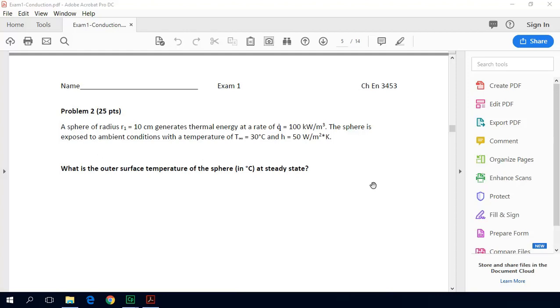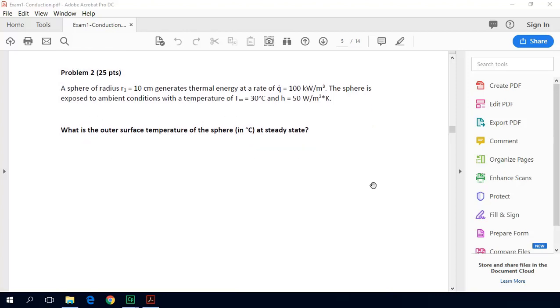So this problem can be solved just with an energy balance. We're told that we have a sphere that has this radius r₁. We're told that it generates thermal energy uniformly at a rate of 100 kilowatts per cubic meter. We're asked what is the outer surface temperature of the sphere.